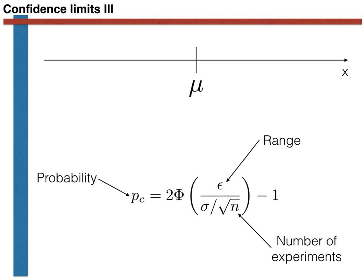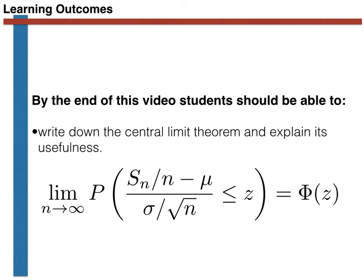In other words, Pc is the probability that the estimate of the mean obtained by doing n experiments is within the box shown highlighted in blue in the diagram. To finish, the aim of this video was to get you to a place where you could write down the central limit theorem and explain its usefulness. The ideas introduced in this video are difficult and you will need to think carefully about them and solve some problems to understand them better. You might also watch this video again if you're confused. Thank you for your attention.